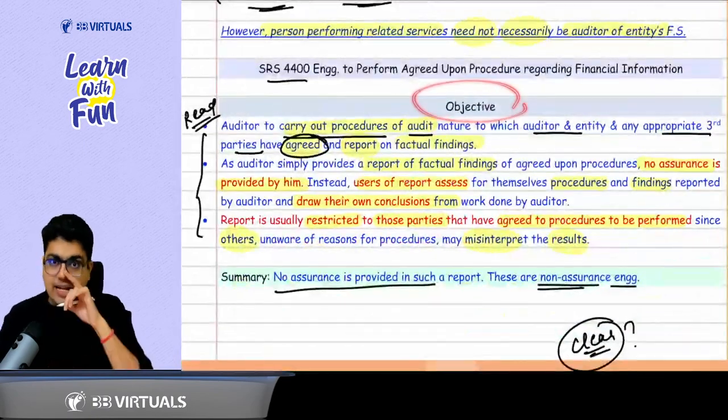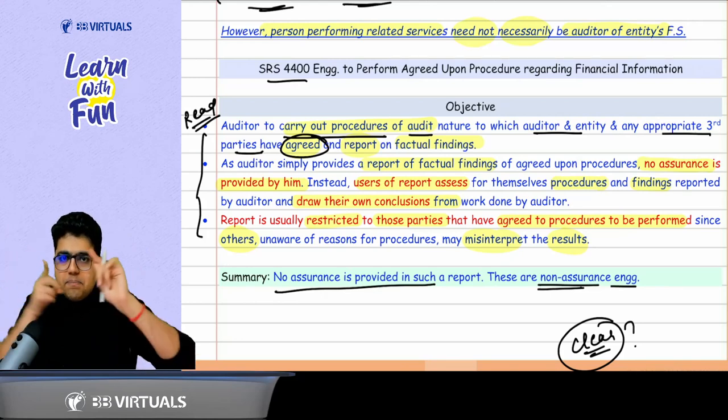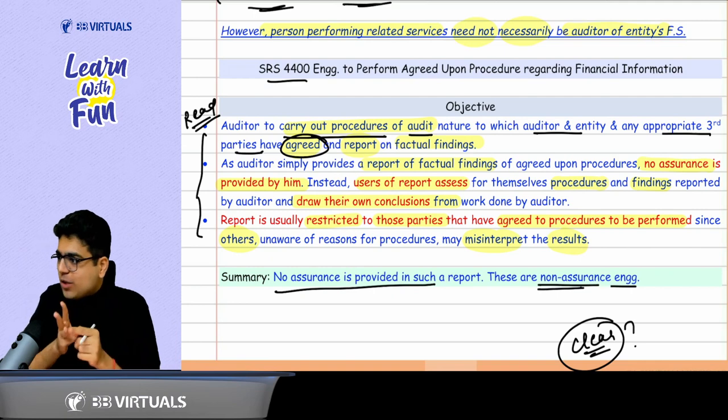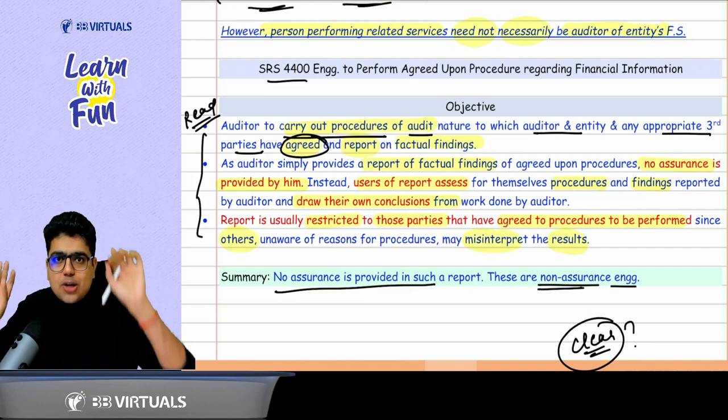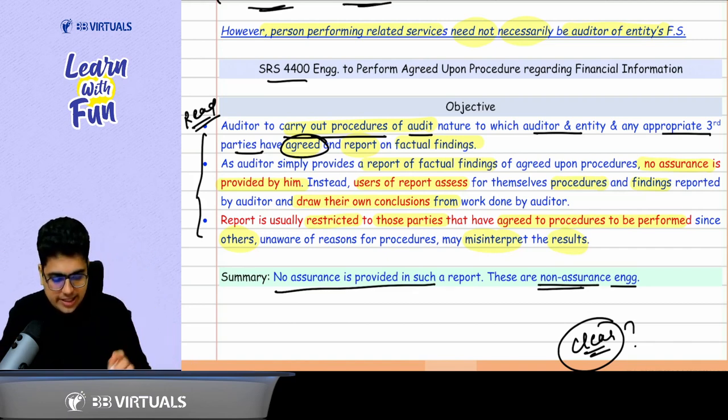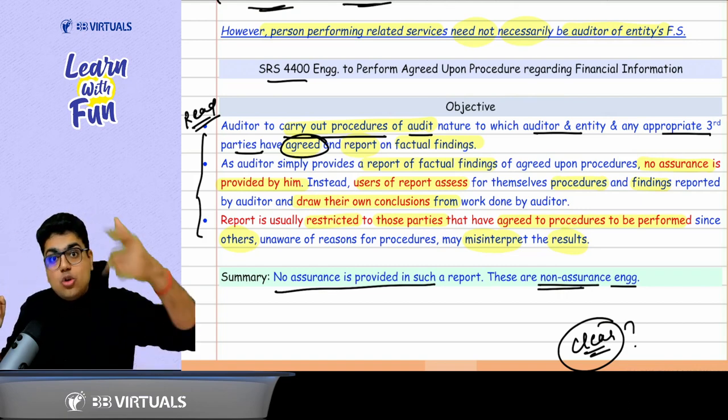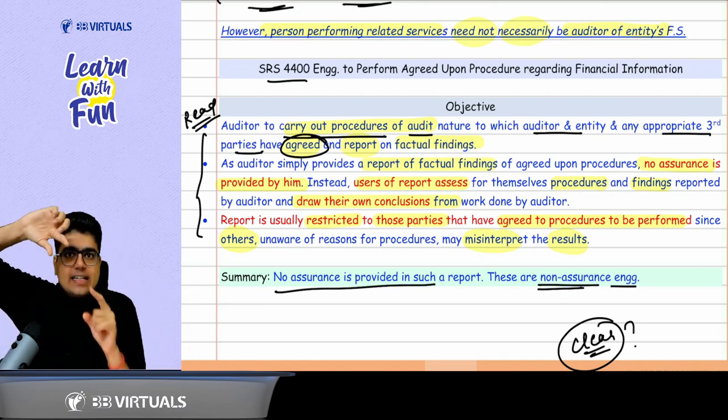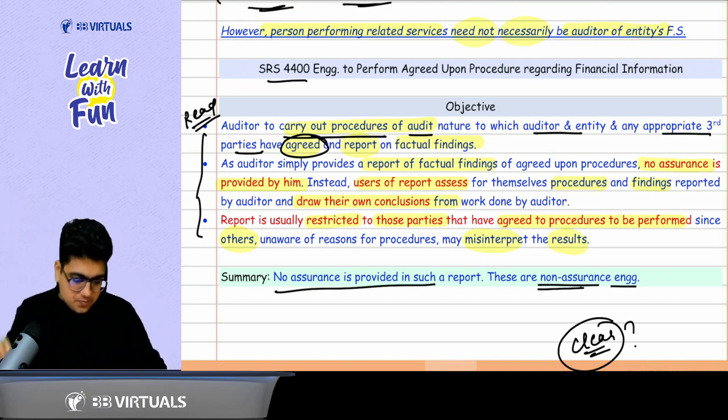Now, what is the objective? As I already told you, you have to agree and perform the procedures. Based on the procedures, report the factual findings. Do we have to give the opinion? No, no, no, no opinion. Why no opinion? Because it is not an assurance engagement. So these are the basic points you need to remember. But how will the user form the opinion? User will form the own opinion. You don't give your conclusion. Based on your facts, user will draw his own conclusion.